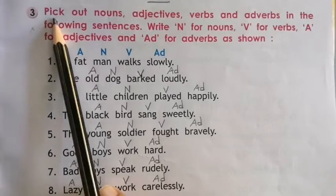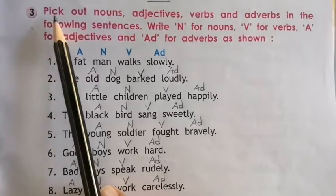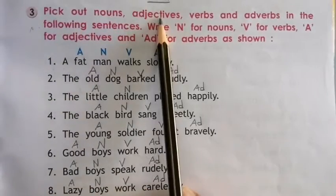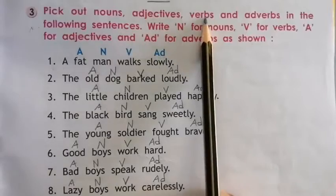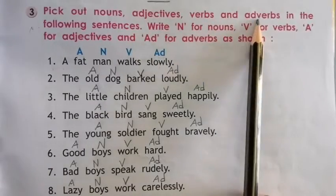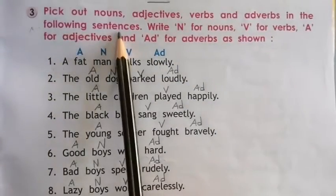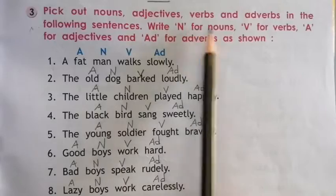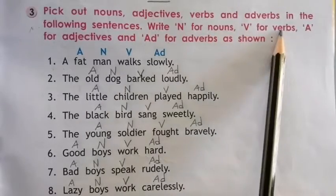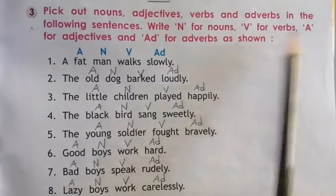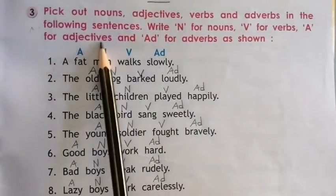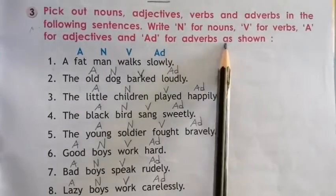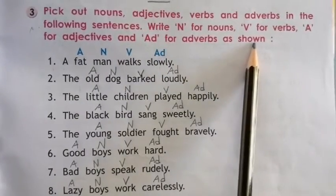Have attention here. Pick out nouns, adjectives, verbs and adverbs in the following sentences. Write N for nouns, V for verbs, A for adjectives and AD for adverbs as shown.